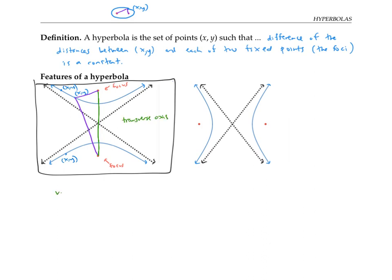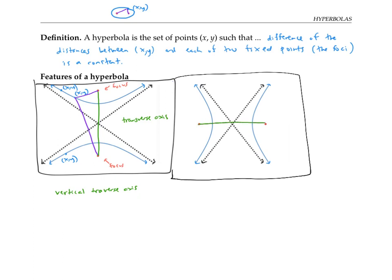In the left picture, we have a vertical transverse axis, and the hyperbola itself reminds me of a person lying down horizontally. In the right picture, our transverse axis between the two foci is horizontal, and the blue hyperbola reminds me of a person standing up vertically. It's possible for a hyperbola to be oriented other ways, but we'll only consider horizontal and vertical orientations in this video.